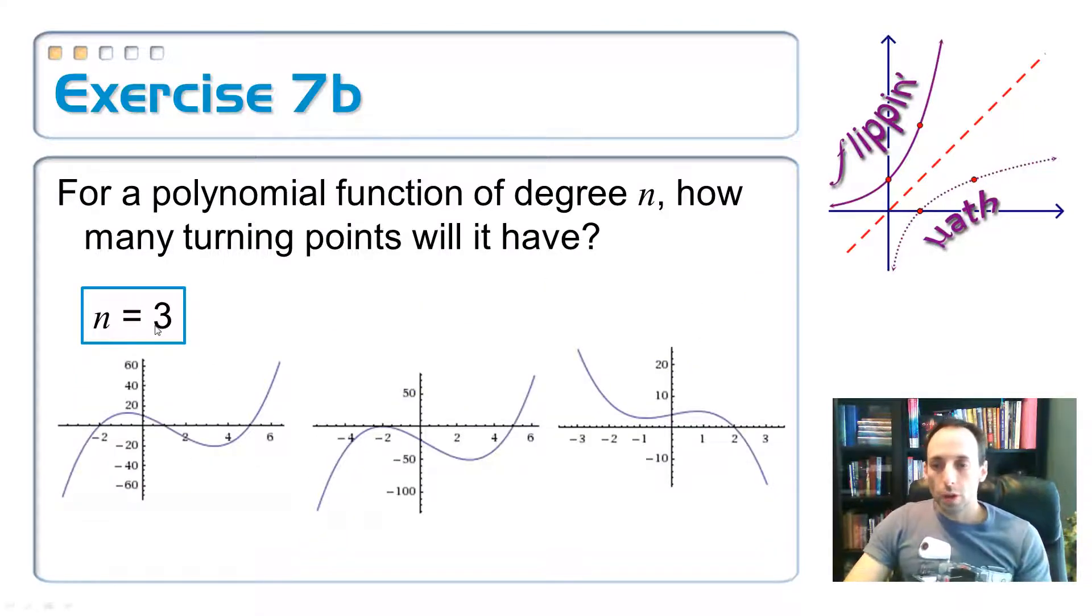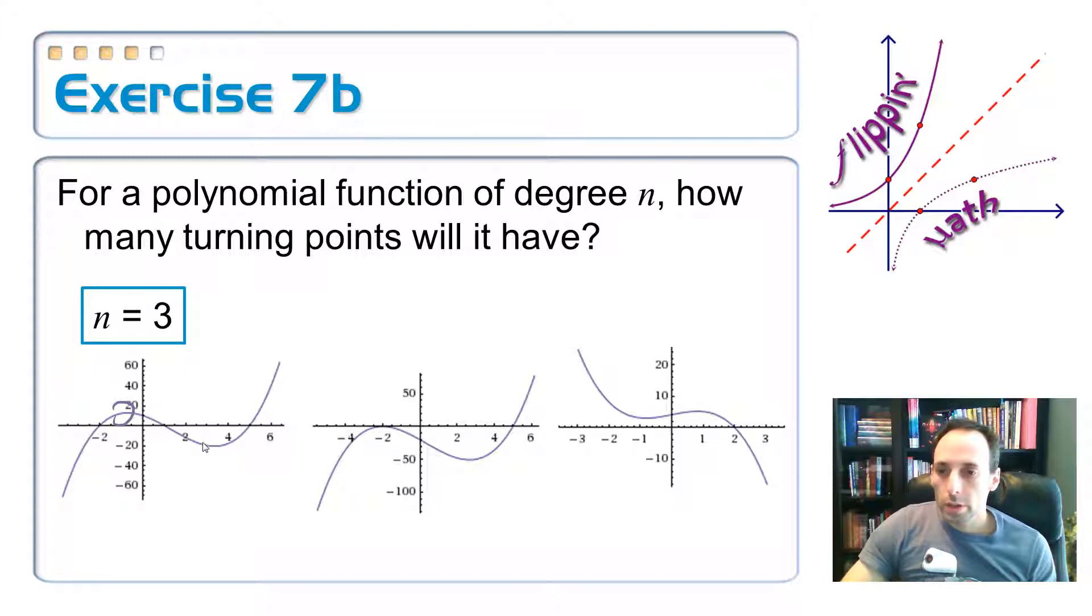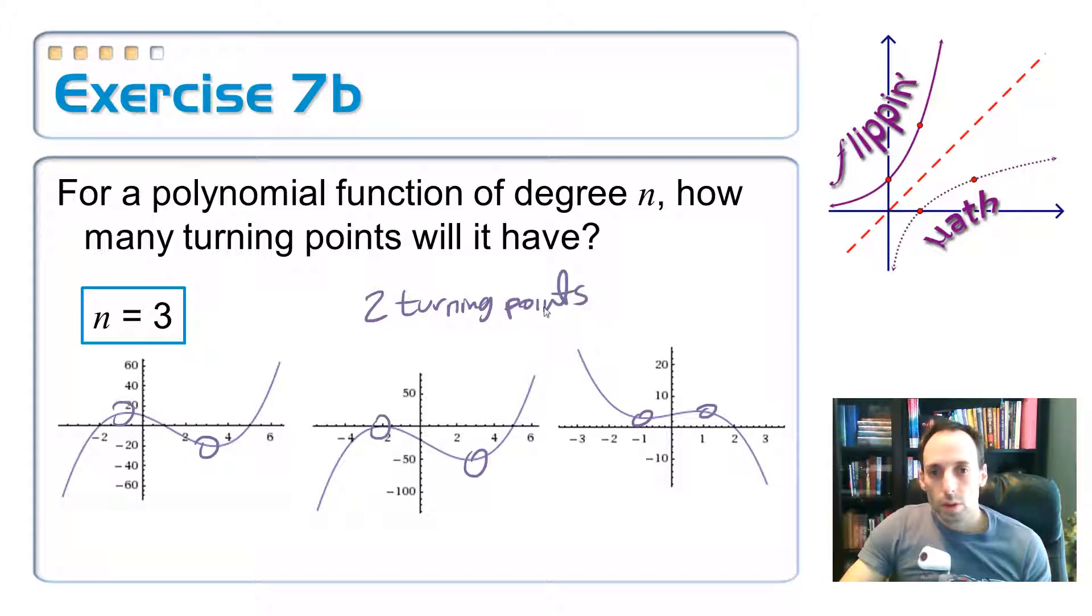So in a cubic, our degree is three. I can have two turning points. And the degree was three.